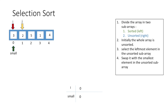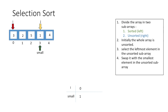At every step we compare the value at small and the value at j. If the value at j is smaller than the value at small, we store the index of that element in small. By comparison, 2 is smaller than 3, so by equating small to j we store index 1 in small, then increment j. The value at j is 5, which is greater than 2, so there is no change in small and we move on. Again comparing, 1 is smaller than 2, so we equate small to j and small now has index 3.